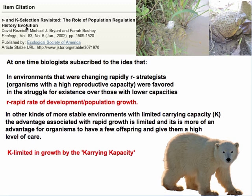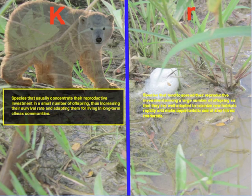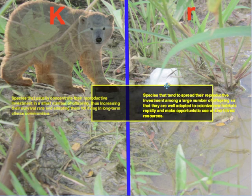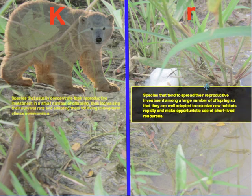With all of that said, it's still very useful to define one type as K selected and another as R selected. A K selected type would include the polar bear; an R selected type would include the toad. K selected species concentrate their reproductive investment in a small number of offspring, increasing survival rate and adapting them for long-term climax communities. R selected species spread their reproductive investment among large numbers of offspring, well adapted to colonize new habitats rapidly and make opportunistic use of short-lived resources.